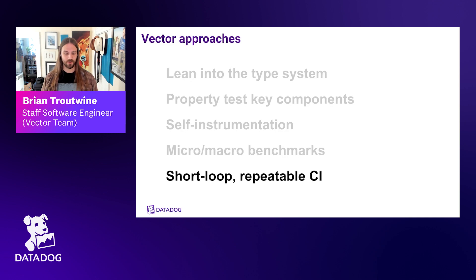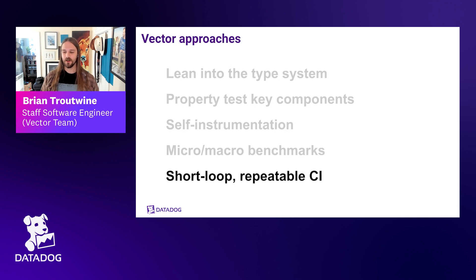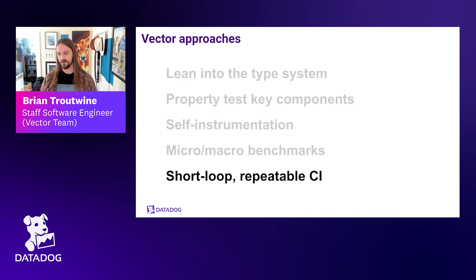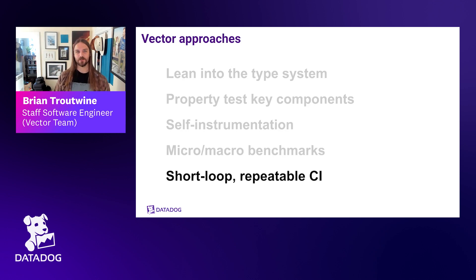That has allowed us release over release to increase performance in a way we can statistically measure. Software is always riddled with bugs, but ideally we're not adding new ones each time and we suss out complex bugs. One of our engineers just landed a pretty large change that was elaborately property tested — we'll see what edge cases those didn't catch.